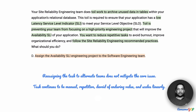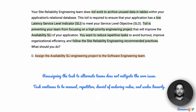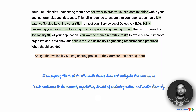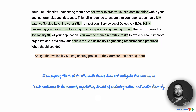Option D suggests assigning the availability SLI engineering project to a different team — the software engineering team — so instead of the DevOps team doing this, we transfer it to another team. But that is as good as hiring somebody else. Just reassigning the task does not mitigate the core problem. They will still have to deal with the fact that it is manual, repetitive, devoid of engineering value, and scales linearly. Also, as a DevOps team, we already have the development capability to fix this, so there is no reason to bring in a specialist software engineering team. Option D is out.